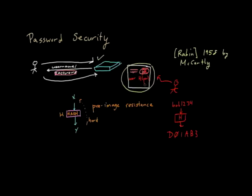And so what the server would store, instead of actually storing in the past, it would have stored bob1234, but in the scheme that Rabin would have proposed, it would have stored this value d01ab3 instead.